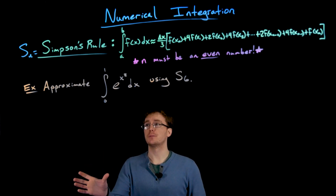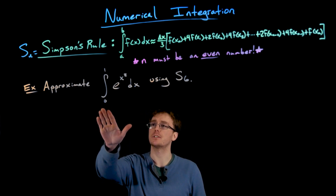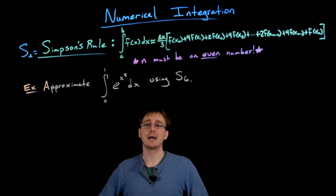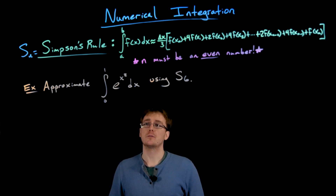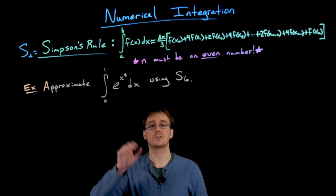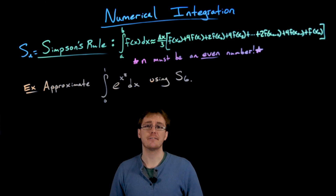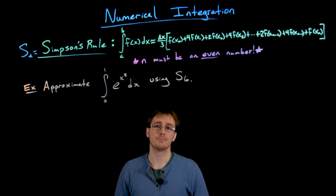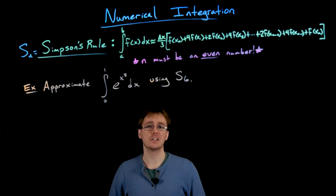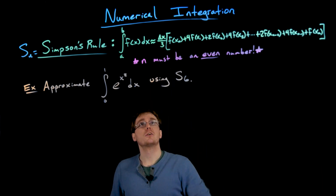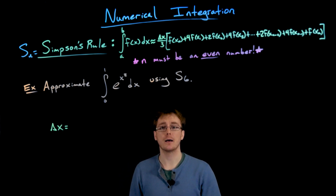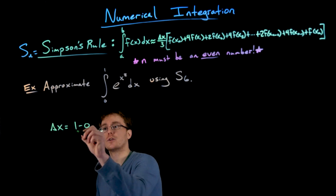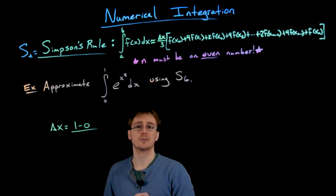In this example, we're going to apply Simpson's rule to approximate a definite integral. Our definite integral of interest is the integral from 0 to 1 of e to the power of x squared. We're asked to approximate this using Simpson's rule with n equals 6, or with 6 subintervals. This is a case where we really have to use an approximation method because e to the x squared is one of those functions that does not have a nice antiderivative we can write a formula down for. Delta x equals b minus a over n, giving us one-sixth as the width of each subinterval.